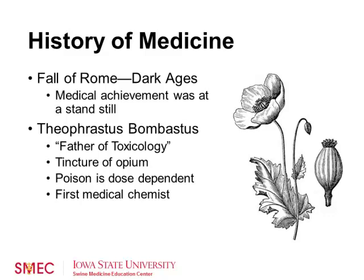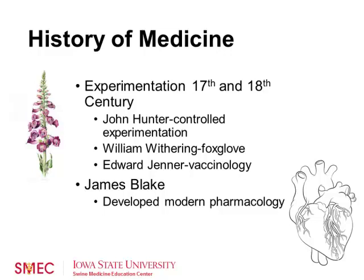Experimentation continued during the 17th and 18th centuries. John Hunter was skilled in controlled experimentation, with a passion for research in wound healing, transplantation, oncology, and many other areas of medicine. William Withering discovered that the foxglove plant could be used for increasing cardiac contractility and controlling irregular heart rate. We later discovered that was digitalin, and that drug is still in use today for heart disease.